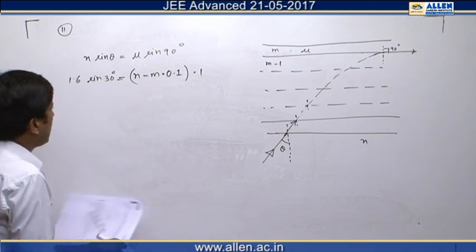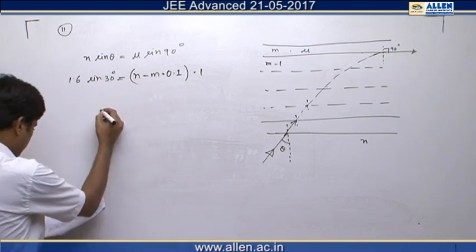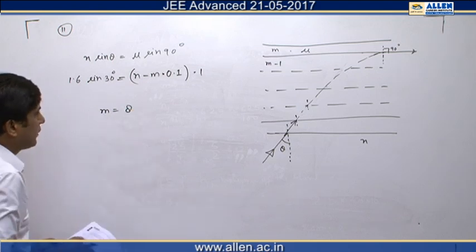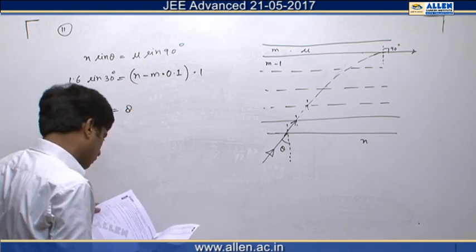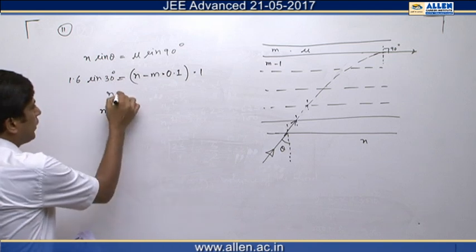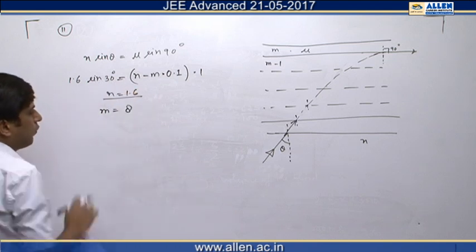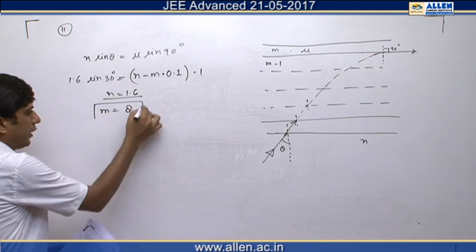We get the value of M as M equals 8 because the value of N is also given in the question, that is N equals 1.6. Therefore, the value of M is 8, hence the answer is 8.